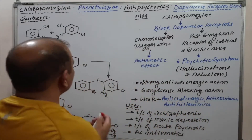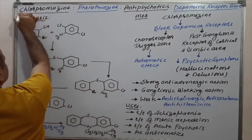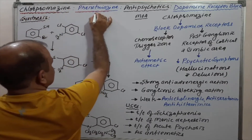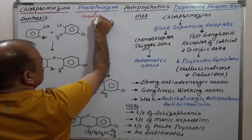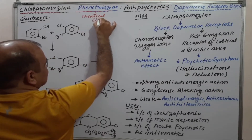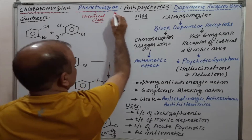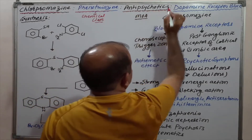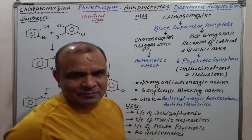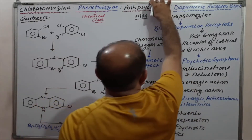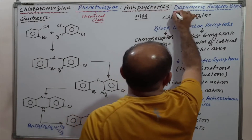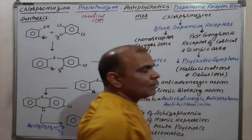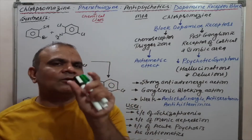Chlorpromazine basically belongs to the Phenothiazine category — that is its chemical class. From this category it belongs to the antipsychotic category, which is its pharmacological class. And it belongs to the dopamine receptor blocker category, meaning it blocks the dopamine receptor.